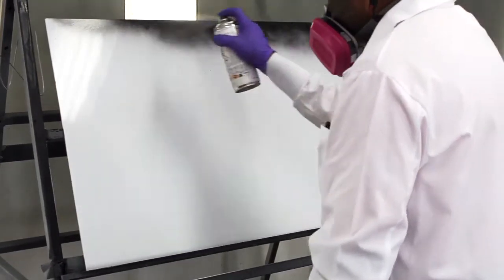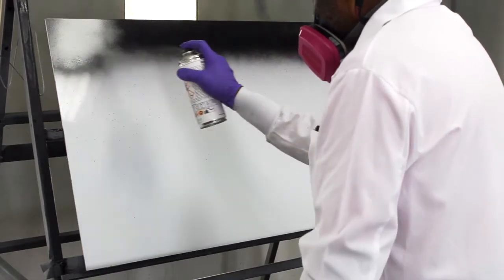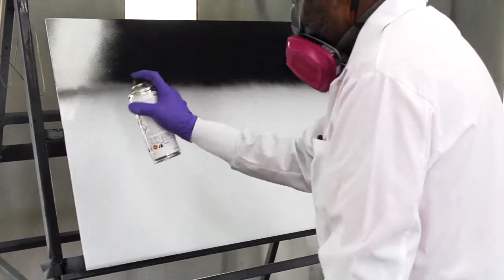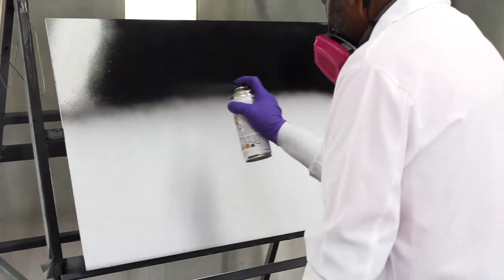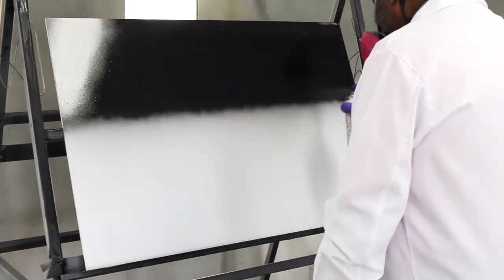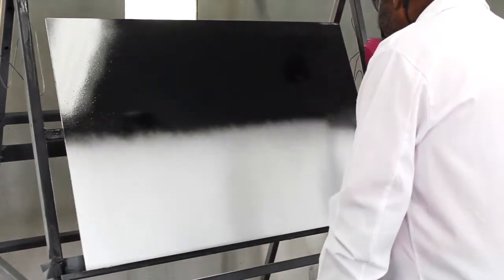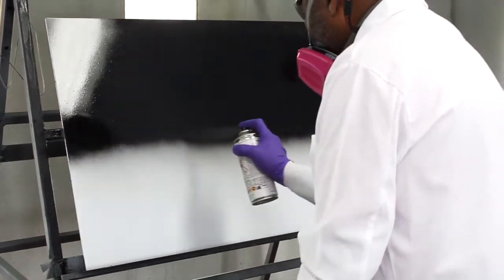We will now begin to apply the ChemGlaze M331-2K can. Start spraying with the sprayer in motion and release the button while the sprayer is still moving at the end of the stroke to avoid runs.